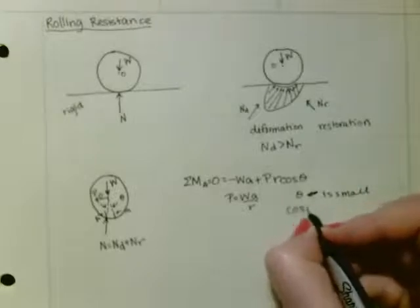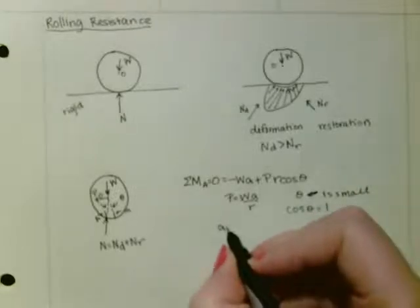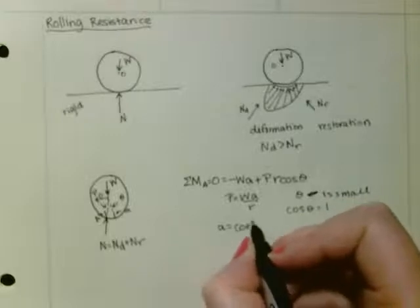Such that the cosine of theta is equal to 1. And A is equal to the coefficient of rolling resistance.